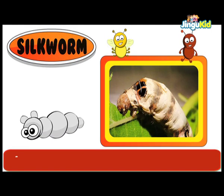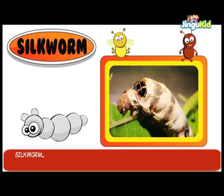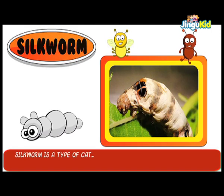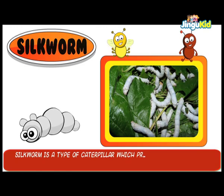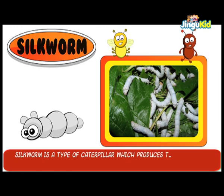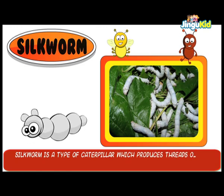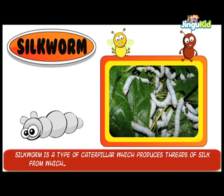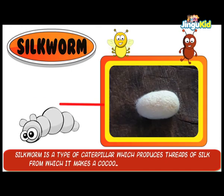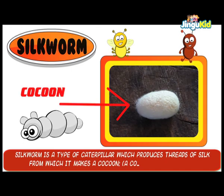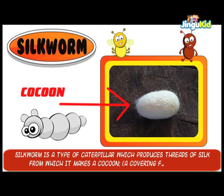Silkworm is a type of caterpillar which produces threads of silk from which it makes a cocoon, a covering for its body.